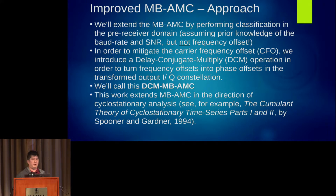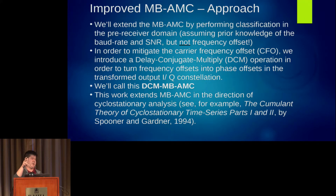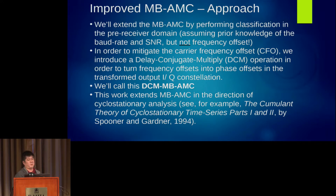So we extend the old system by performing the classification in the pre-receiver domain. We're going to assume prior knowledge of the baud rate and the SNR, but not frequency offset. In order to mitigate that carrier frequency offset, we introduce a delay-conjugate-multiply term. Basically, we take one sample, delay it by a symbol period, conjugate and multiply it against the current sample. That turns frequency offsets into phase offsets and makes the processing really nice. I'll call this DCM moment-based ModRec.